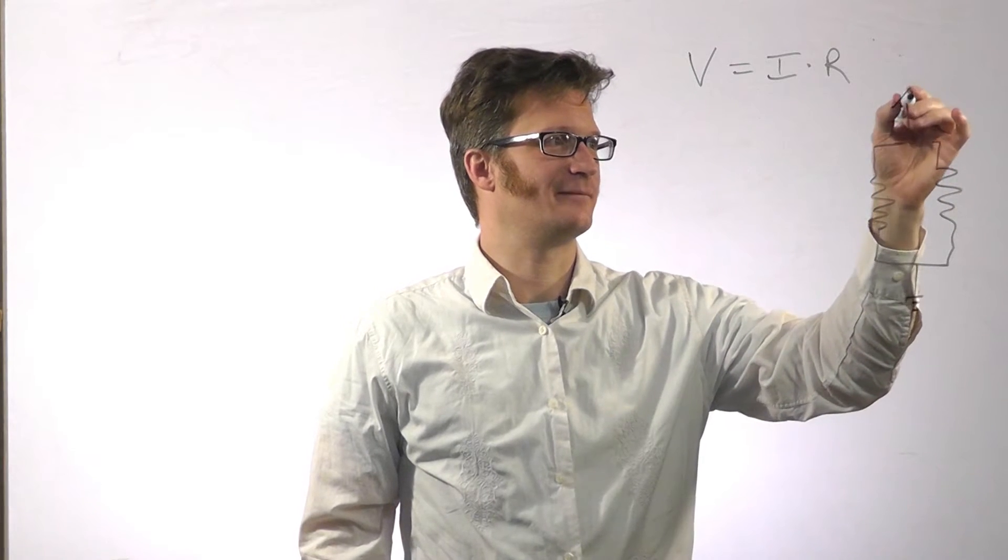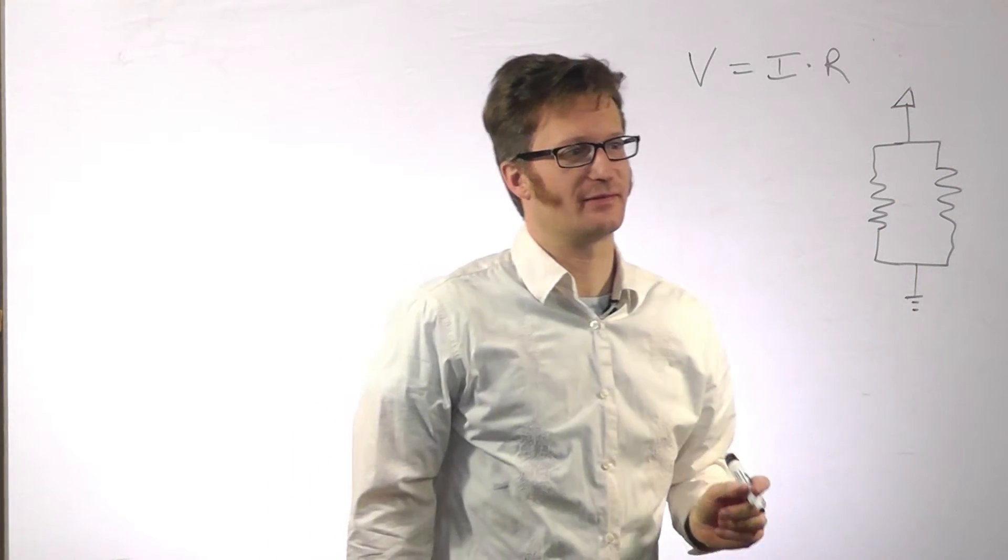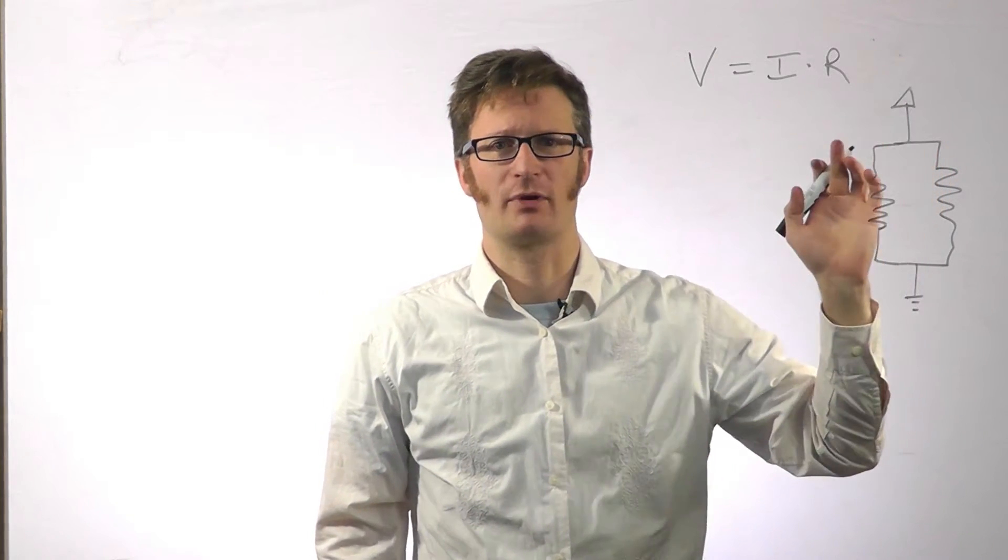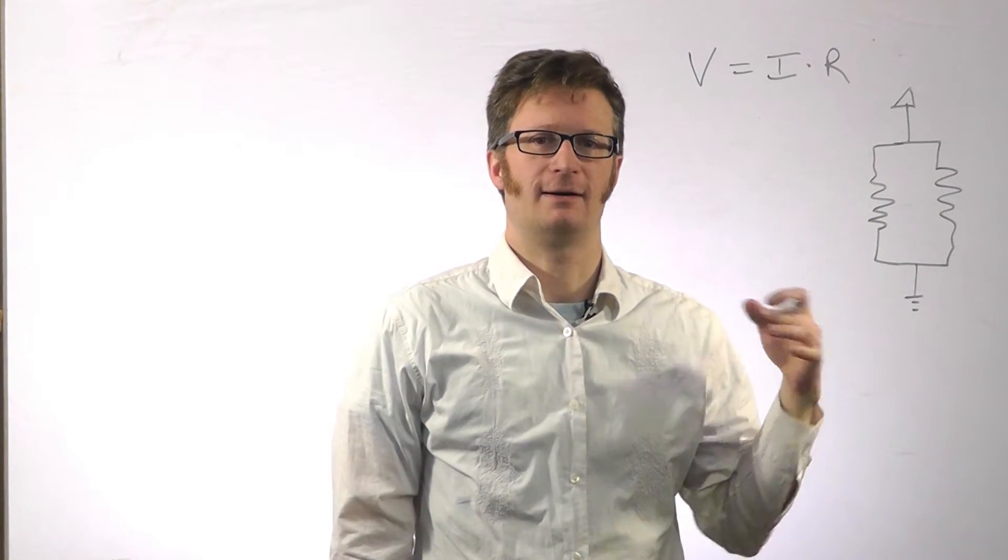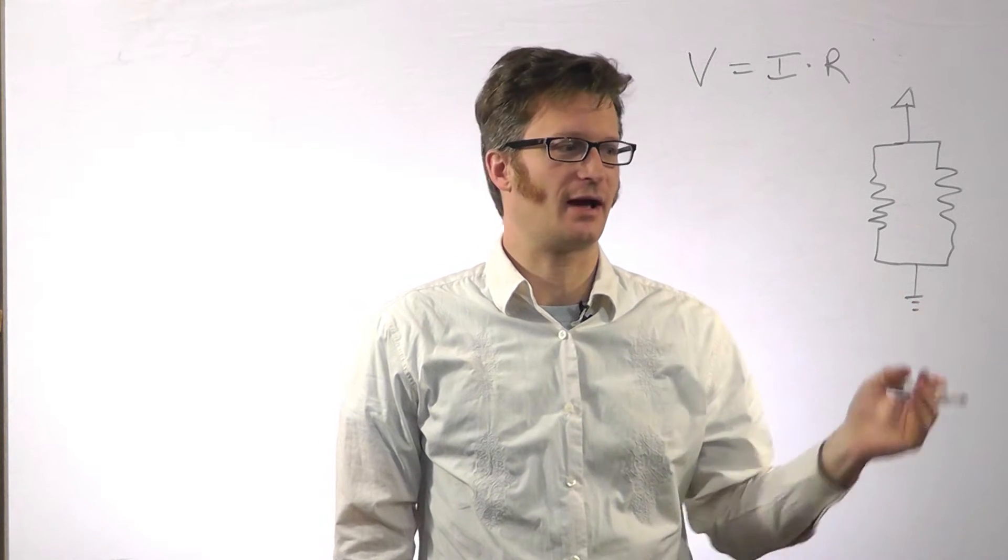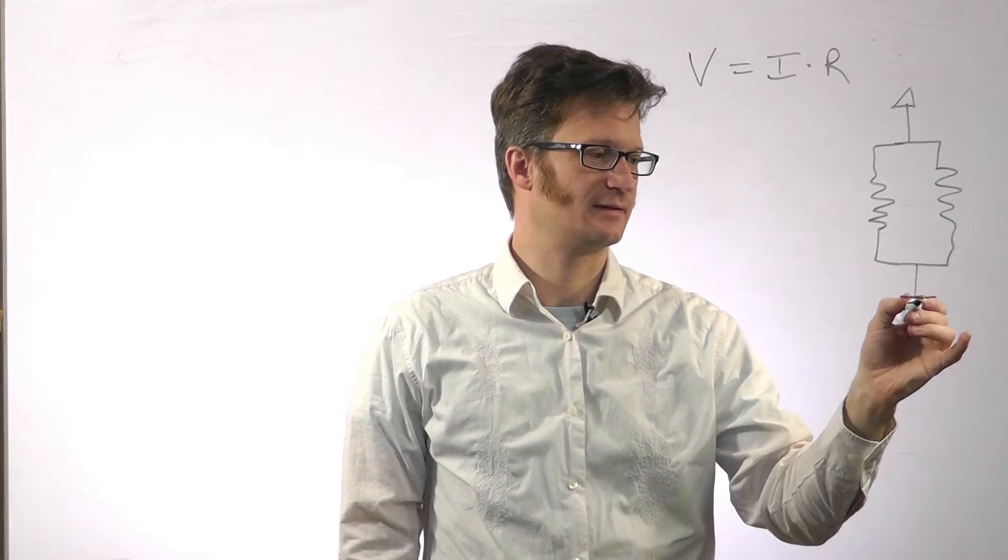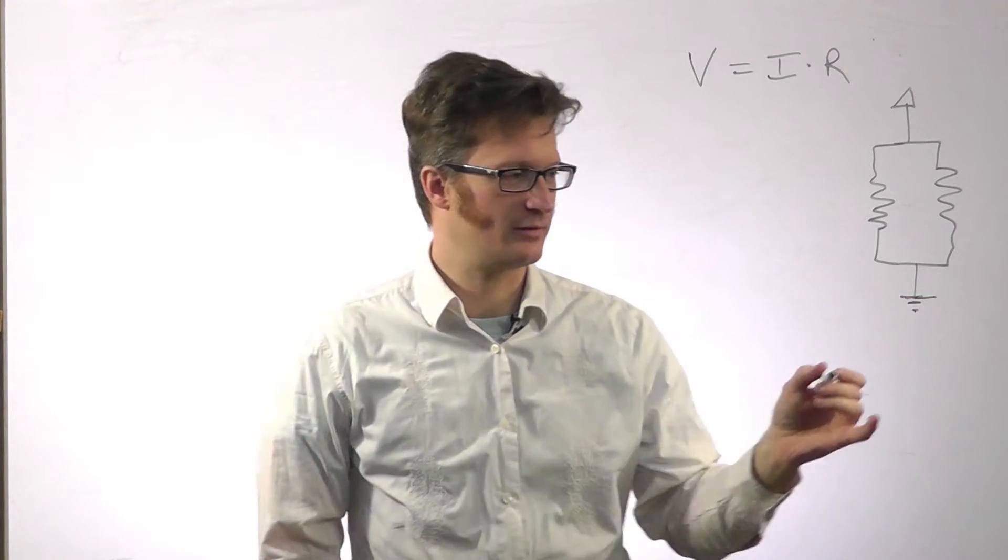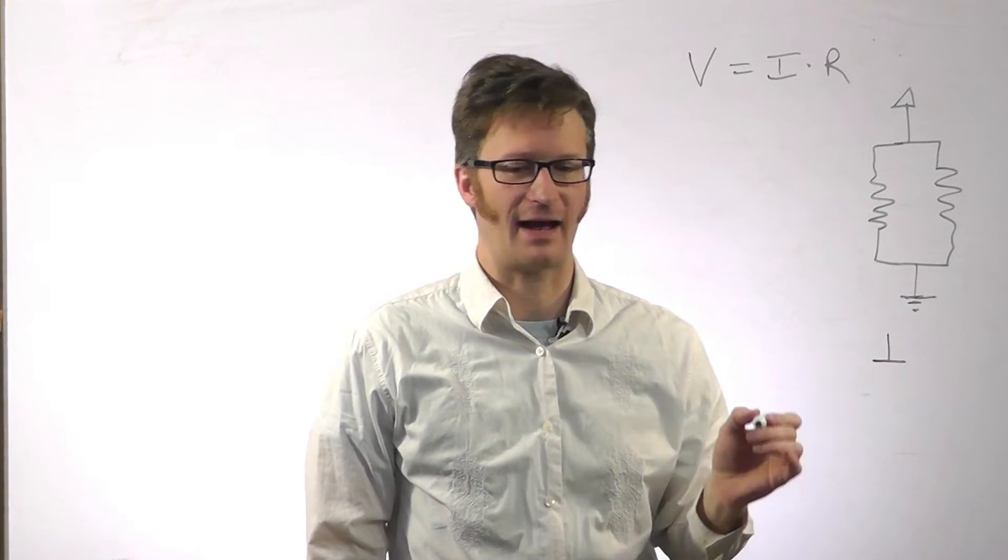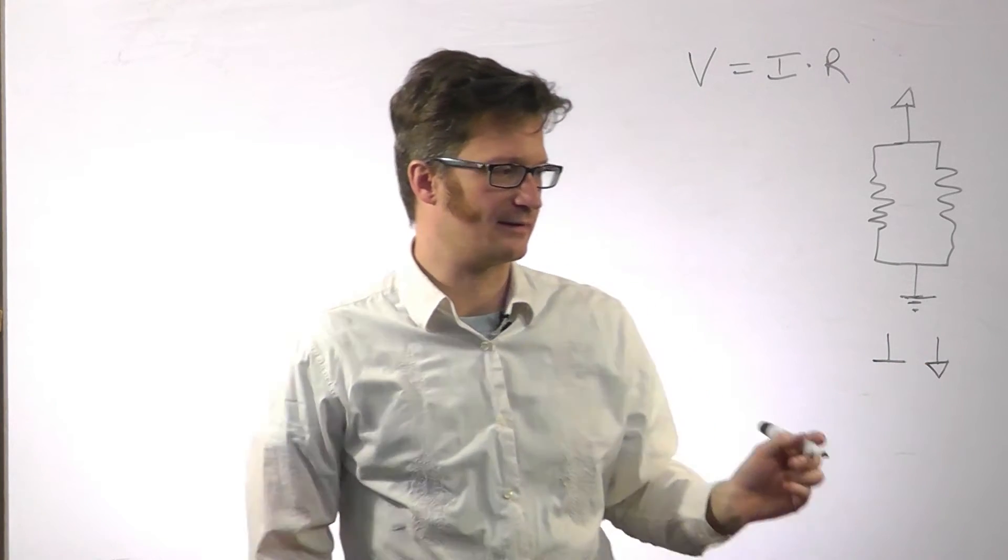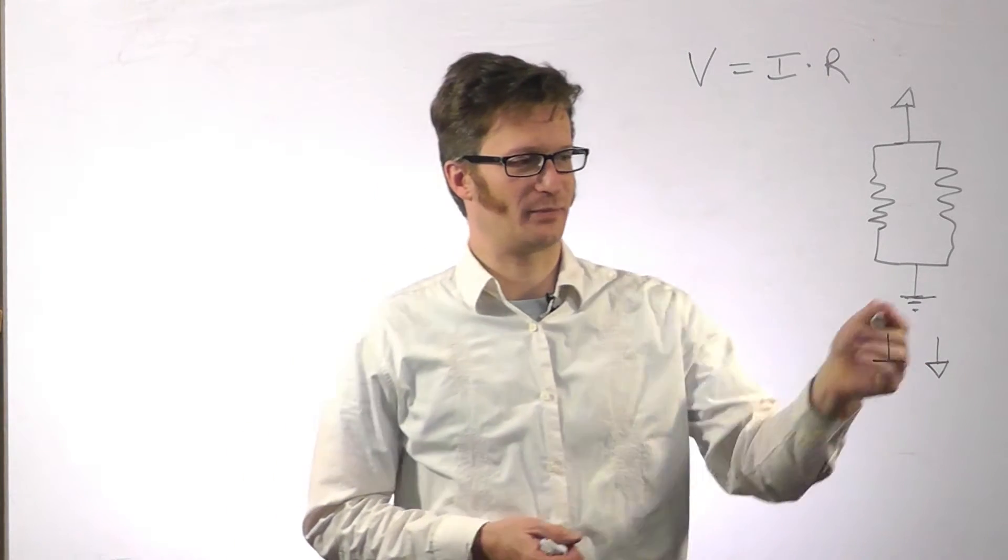One thing that's pretty common is that you'll see an arrow pointing upwards as your positive voltage supply. And a symbol that looks like this could be ground. Sometimes it's also drawn like that. Sometimes it's drawn like that. I prefer this one. It's what I got used to when I started.